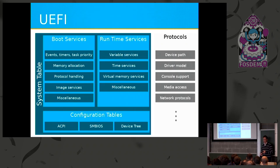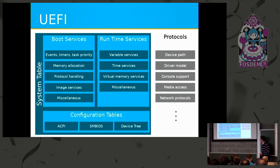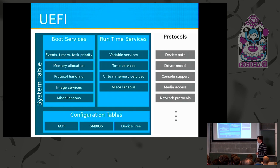When a UEFI binary starts, the first thing it sees is a pointer to the system table. The system table contains different services and allows discovery of protocols offering additional APIs. There are two major parts: boot services, available until the OS is running, and runtime services, which remain afterward — for instance, for rebooting or setting boot variables. Configuration tables are also passed, including the device tree and an SMBIOS table. Protocols provide things like network access and access to block devices.